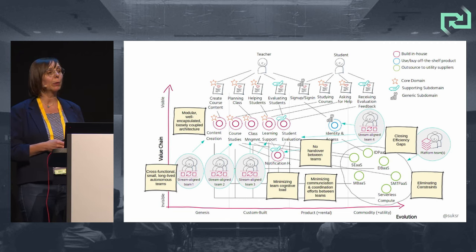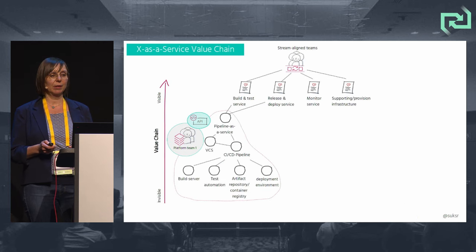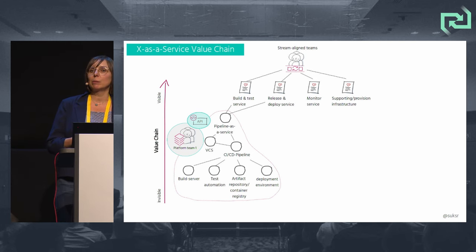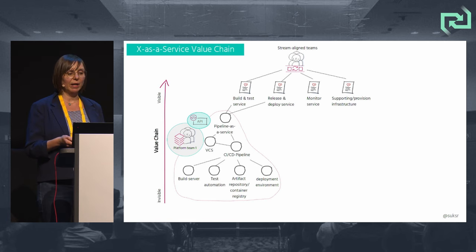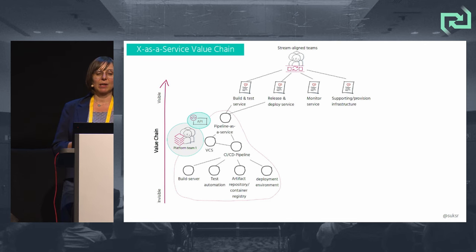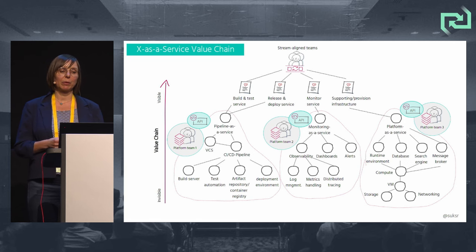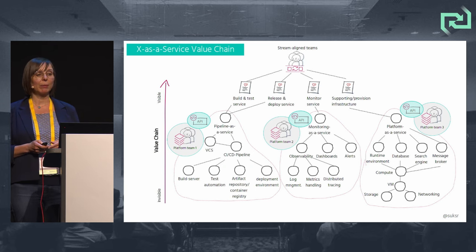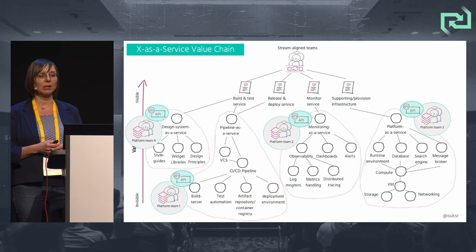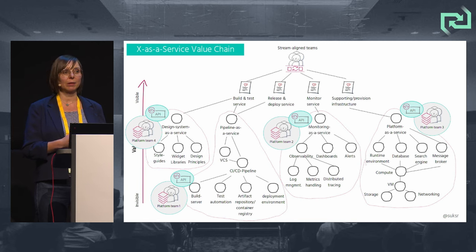We have also optimized our system for flow by minimizing team cognitive load, handovers, communication and coordination efforts between teams, and eliminating delivery bottlenecks. We don't have to stop here — we can also create Wardley maps for internal purposes, switching to the stream-aligned teams as internal users of the platform teams. For example, providing a pipeline as a service to build, test, deploy, and release; or monitoring as a service; or a platform as a service to provision the runtime environment; or even a design system with style guides and widget libraries.